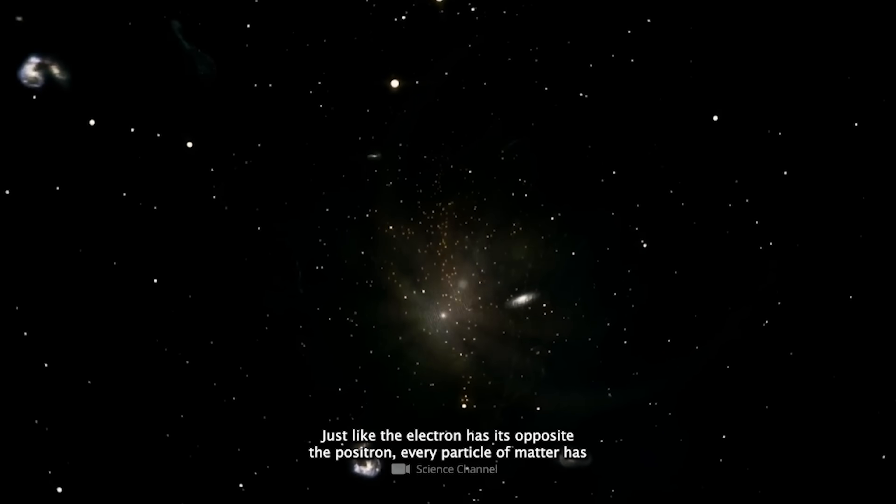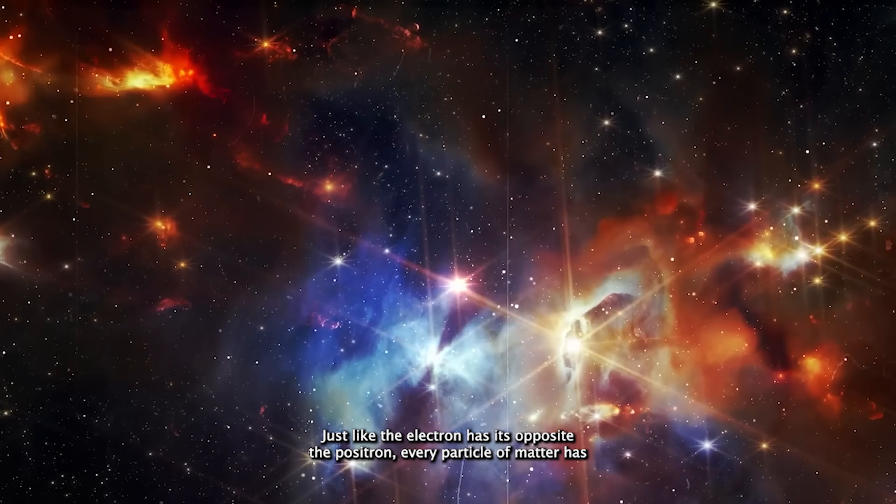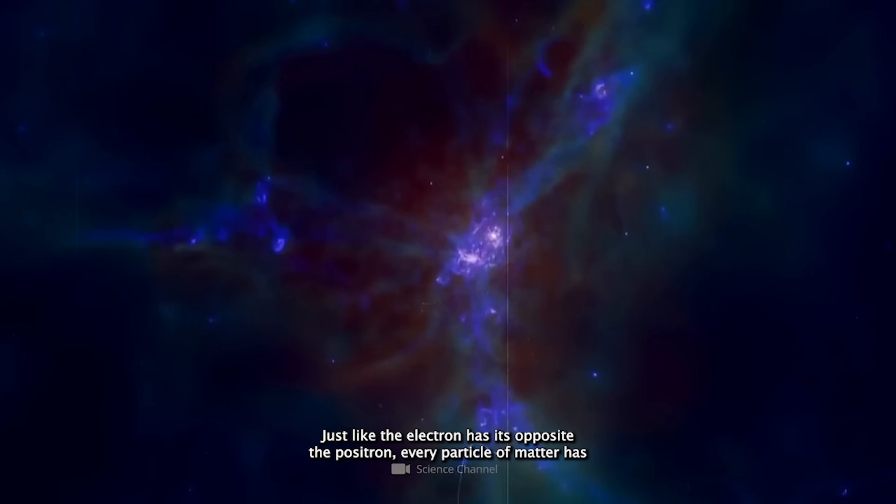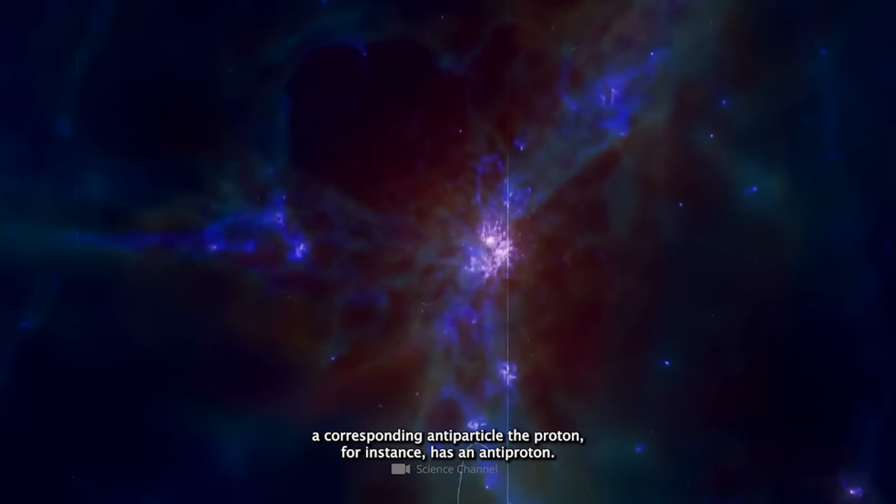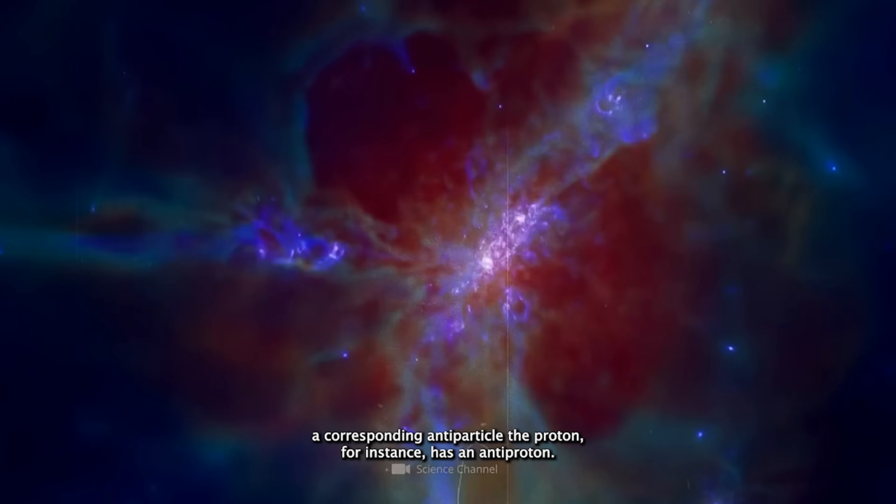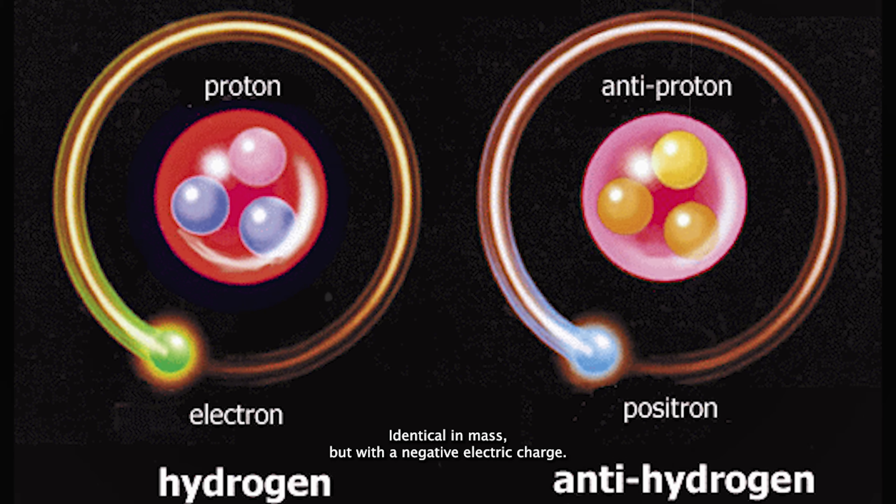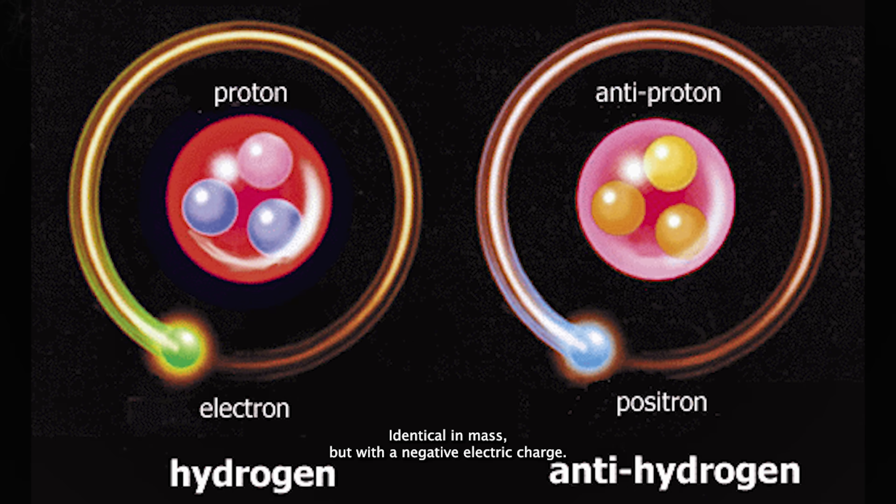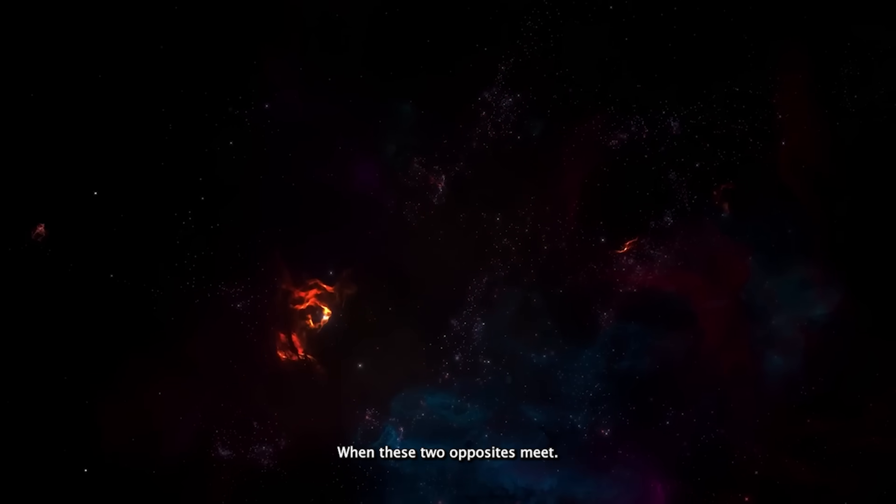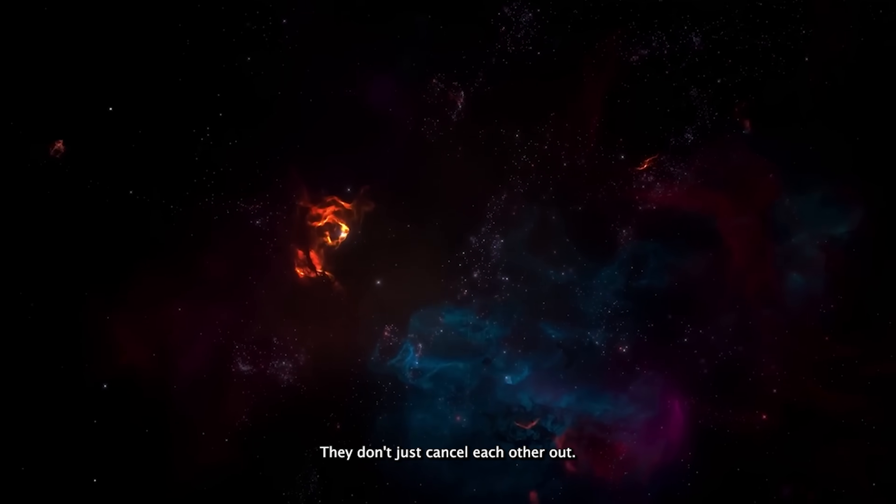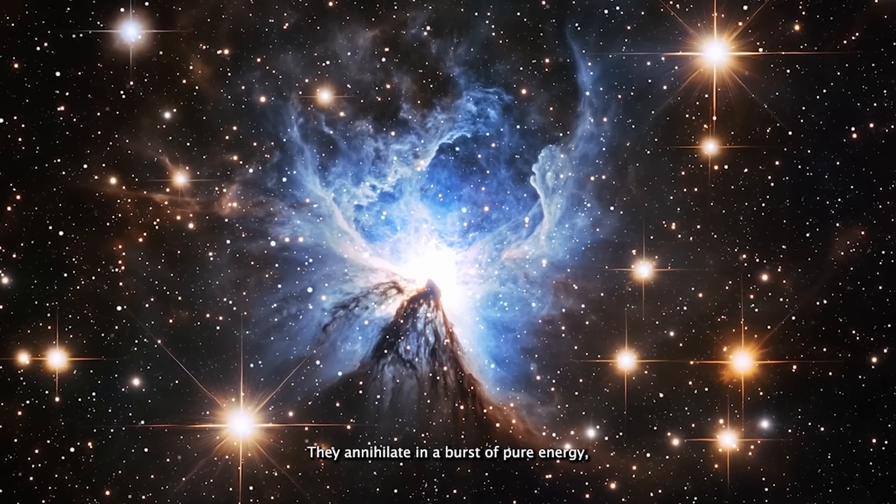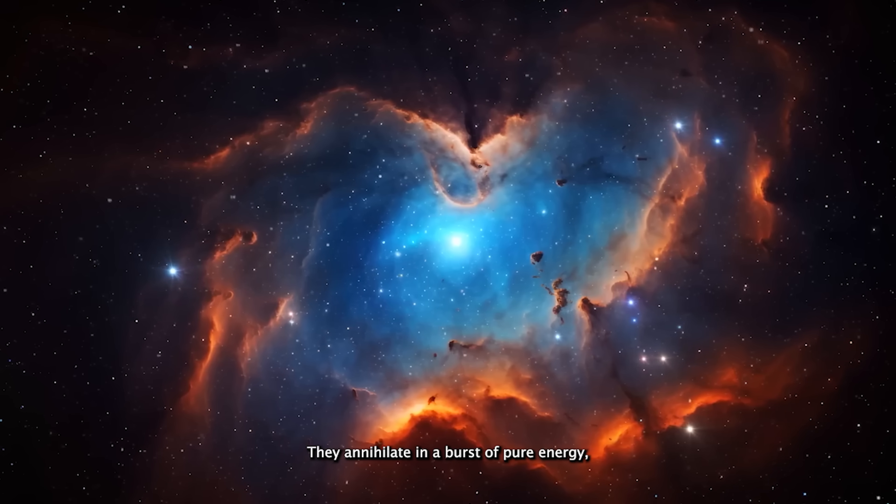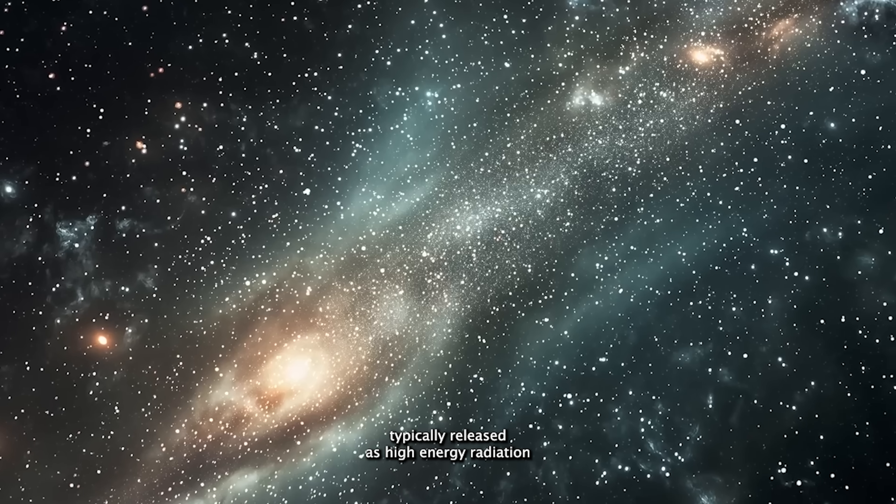Just like the electron has its opposite, the positron, every particle of matter has a corresponding antiparticle. The proton, for instance, has an antiproton, identical in mass but with a negative electric charge. When these two opposites meet, they don't just cancel each other out. They annihilate in a burst of pure energy, typically released as high-energy radiation.